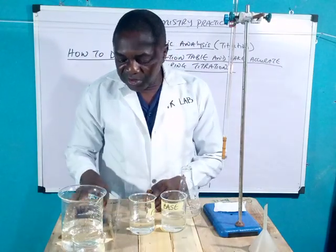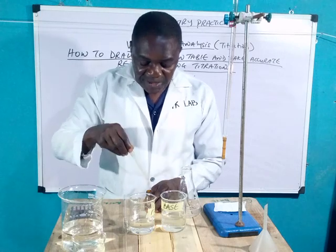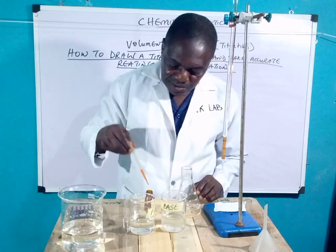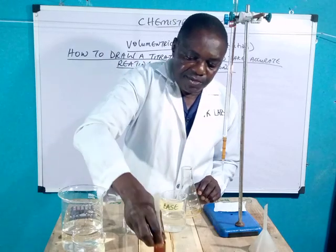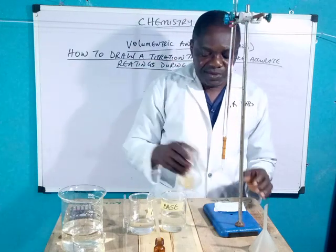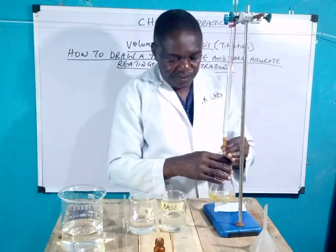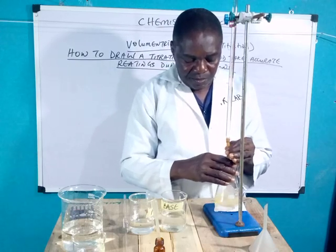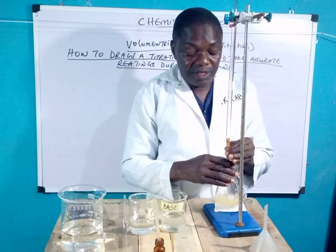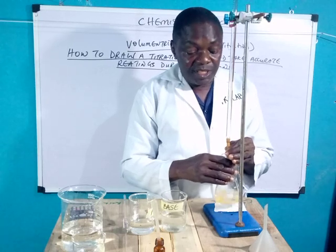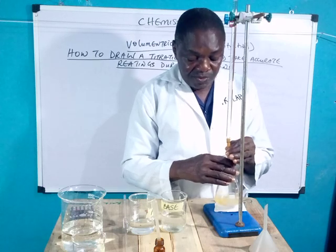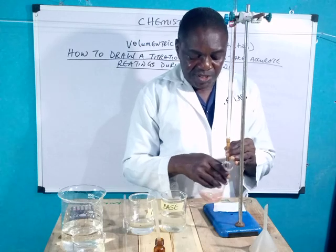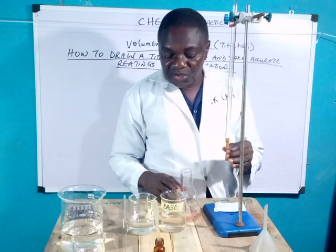Third precaution: remove the funnel before starting your titration. Usually about four precautions is what they normally ask. Add two drops of indicator from the dropper. This is the indicator — as you can see, the color is yellow. Now start the titration. Watch the readings from the burette; when the color changes you will know. It's almost changing — it has changed from yellow to orange. Now take your readings.